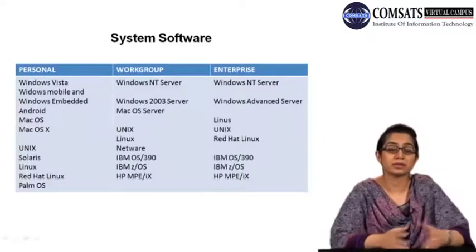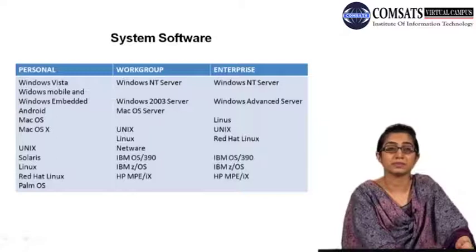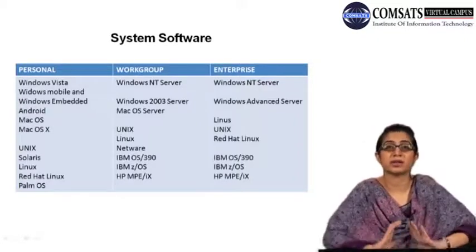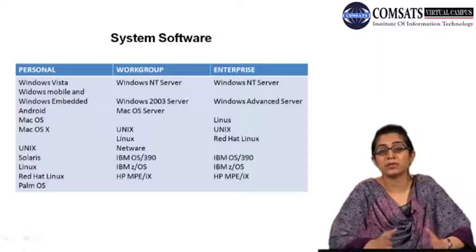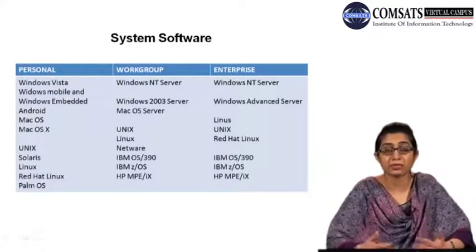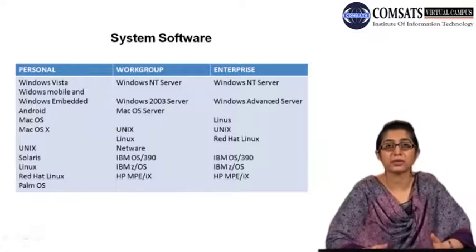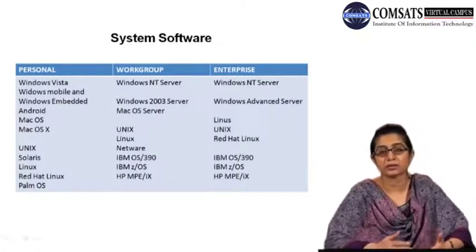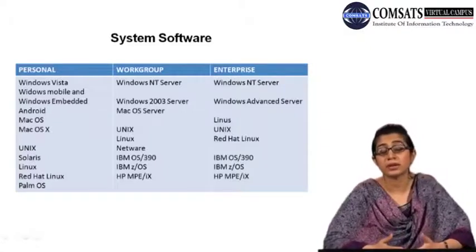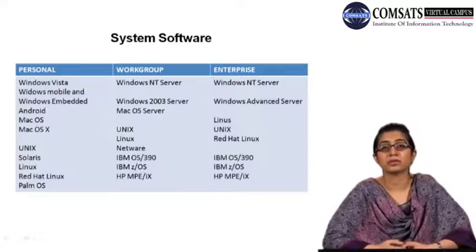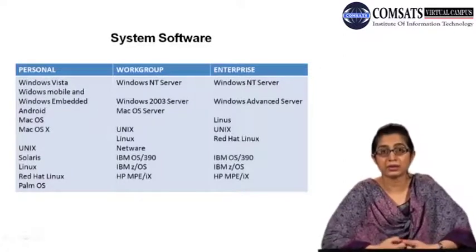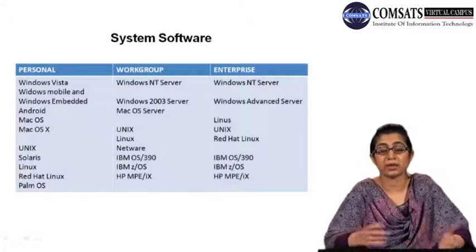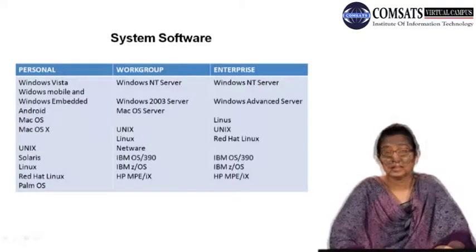In preemptive multitasking, regular multitasking simply allows different programs to share resources at the same time, but preemptive multitasking has the control of how much time is being allocated to a certain application program to use a certain resource. The benefit is that if a certain application gets stuck and hardware is not communicating well, the operating system takes control of the whole system and can shift the CPU time to another application program.